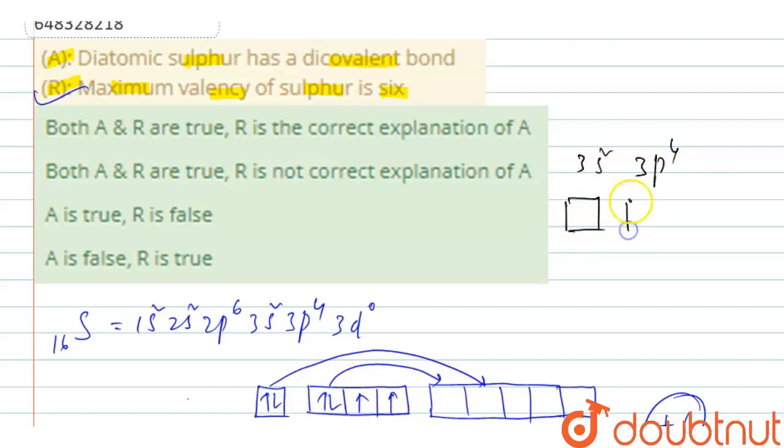So this is S and this is P. S is having here two, it is two half-filled orbitals. Therefore, it overlaps with another sulfur atom.